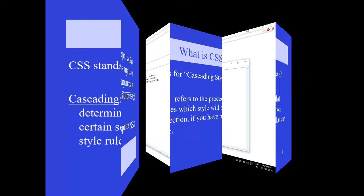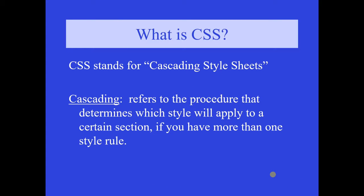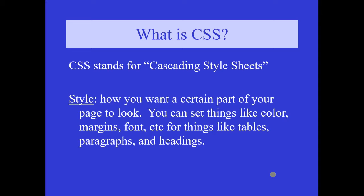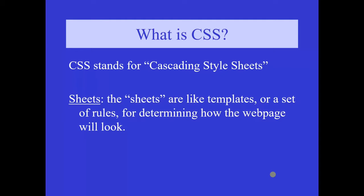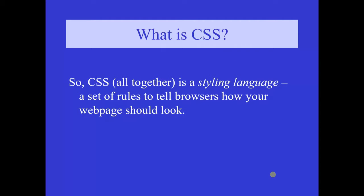What is CSS? CSS stands for Cascading Style Sheets. What is cascading? It refers to the procedures that determine which style will apply to a certain section if you have more than one style rule. What is style? It is how we want a certain part of your page to look — you can set things like color, margins, font, etc., for tables, paragraphs, and headings. What are sheets? The sheets are like templates or a set of rules for determining how the web page will look.